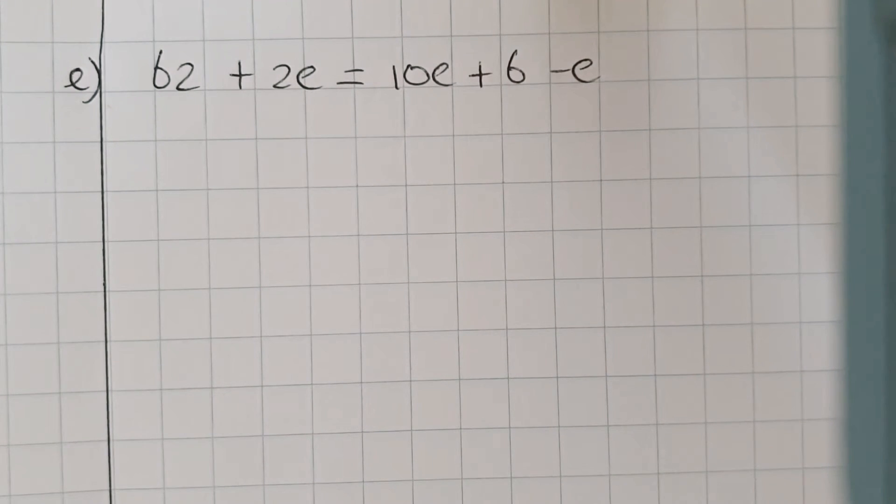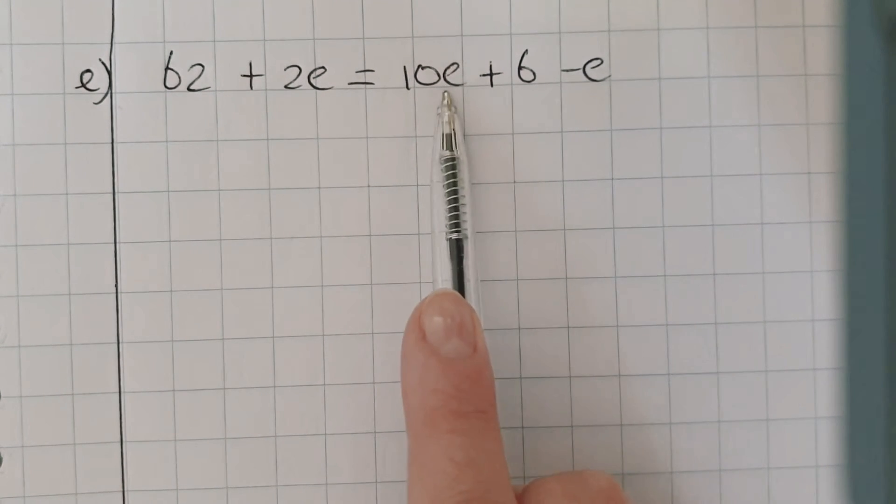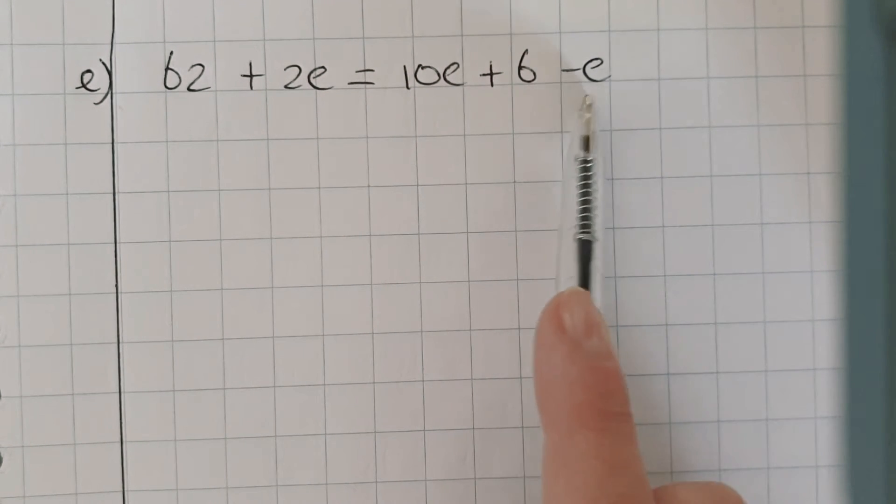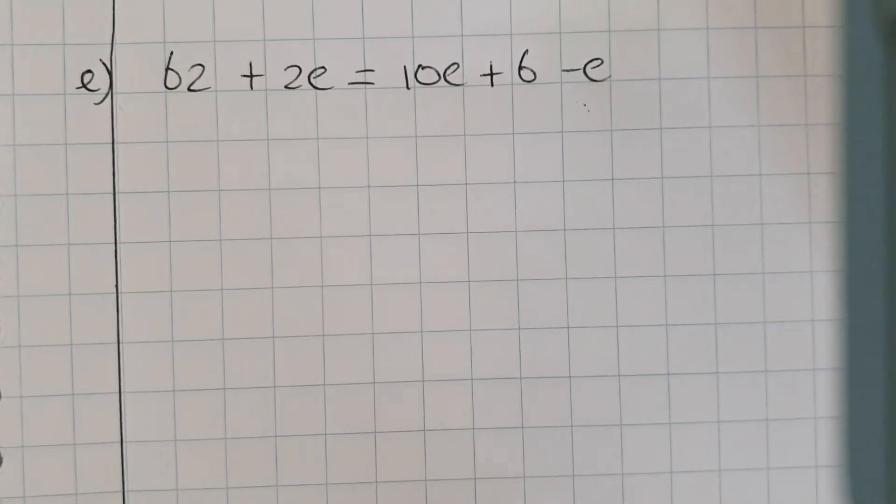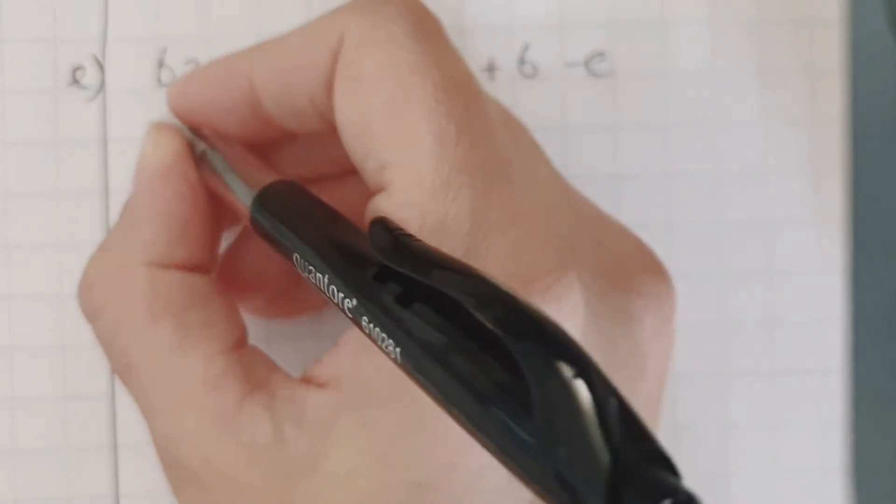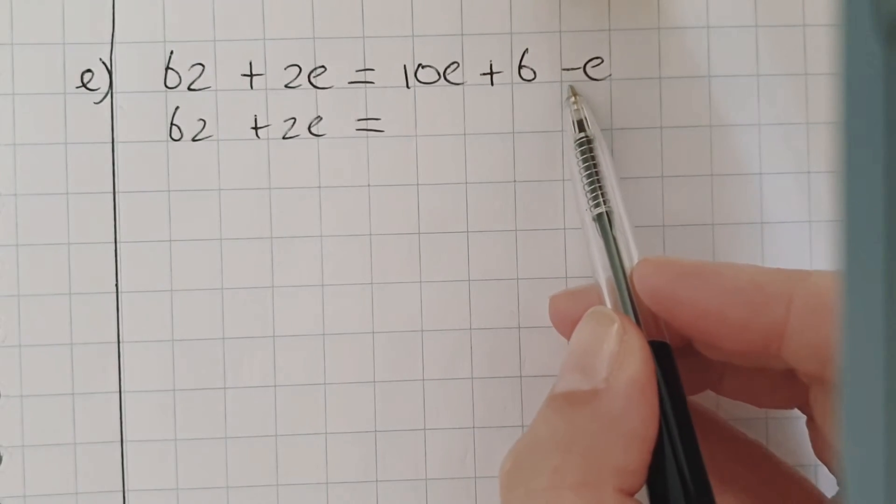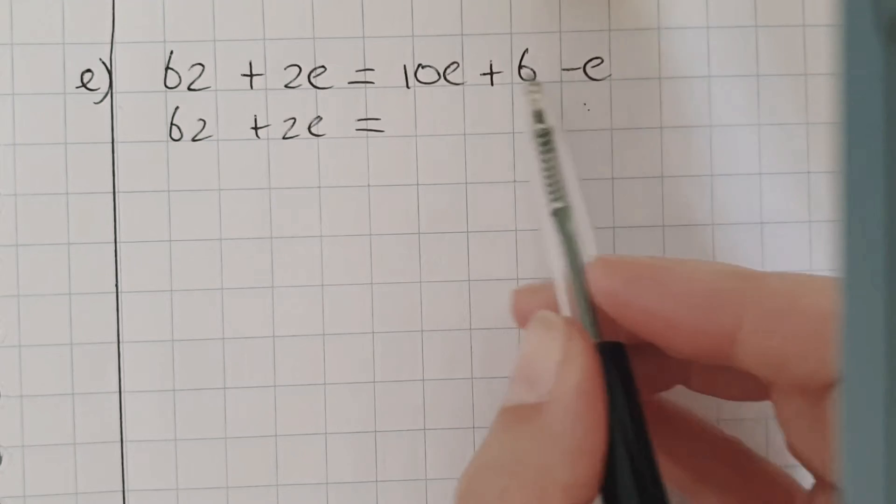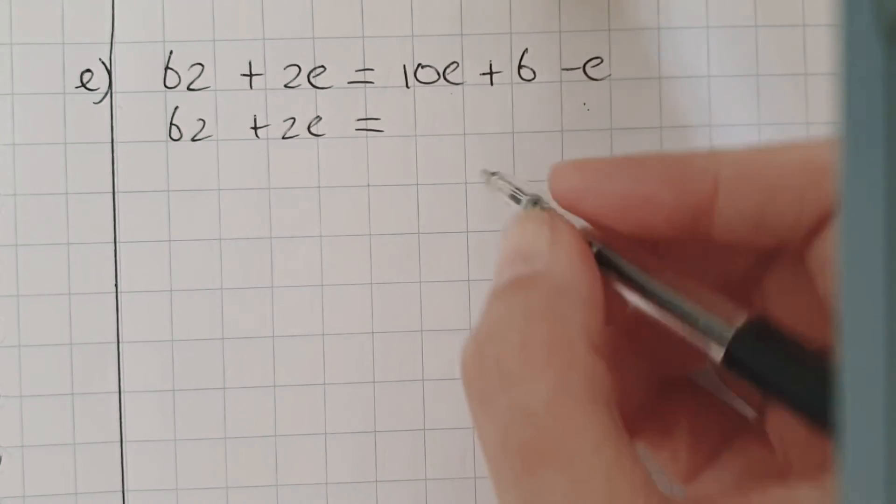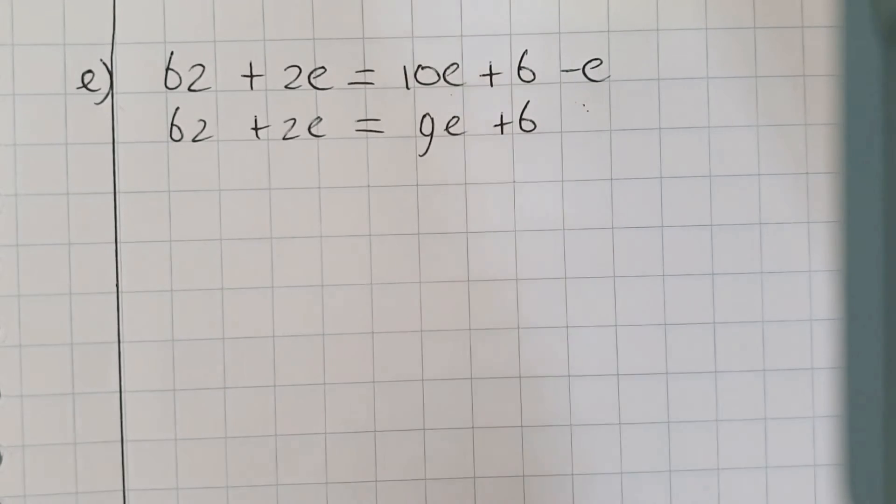E. 62 plus 2e equals 10e plus 6 minus e. Now, on this side, it's a little bit longer because there's a 10e and also a minus e over here. They are like terms. So let me just put this one and this one together. And that's the first step in this case. The minus or the plus in front of a number or letter belongs to that one. So 10e minus e is 9e. So now it looks like this. Now I can start with the balance method.